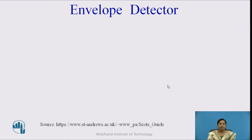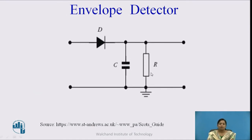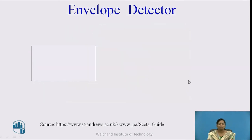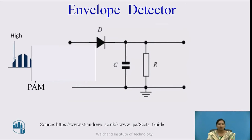Let us see the working of the envelope detector circuit. The envelope detector circuit consists of a diode with an RC circuit. The input PAM signal is given to the diode, and we get the output across this resistor. When a high pulse is given to the diode, it works in forward biasing mode — it acts as a closed switch. The voltage across the capacitor is less than the input voltage, so the capacitor starts charging through the load resistance RL.